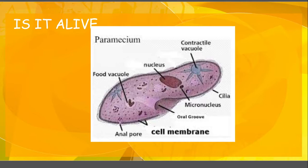A paramecium. This is a single-celled organism belonging to the kingdom protist, and it is also alive — it has all eight characteristics. It will use this little contractile vacuole to get rid of excess water, maintaining homeostasis. Here's where it stores food — there's that nutrition. It will reproduce by just cutting itself in half; that's asexual reproduction. So it has all the characteristics.